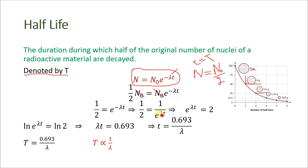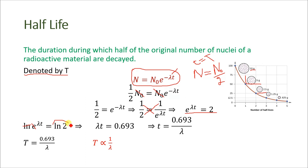By simple cross multiplication — multiplying 2 by 1 and 1 by e^(λT) — we get e^(λT) equal to 2. Now we take the natural log on both sides of the equation. The natural log on the left-hand side cancels the exponential term, giving us λT equal to ln(2).